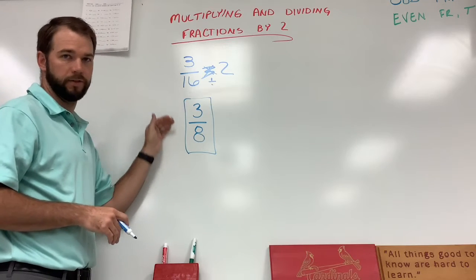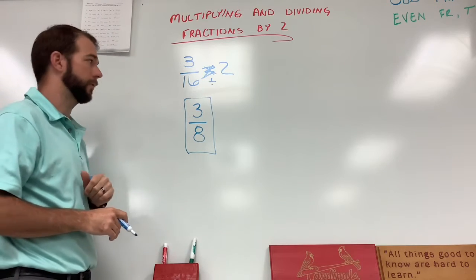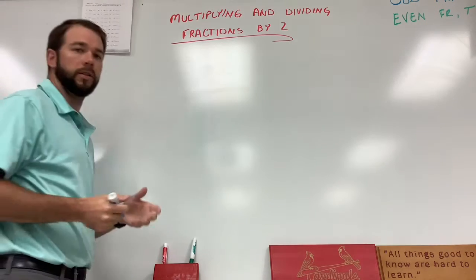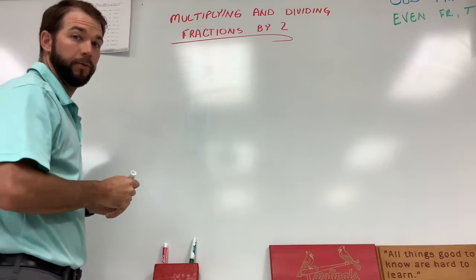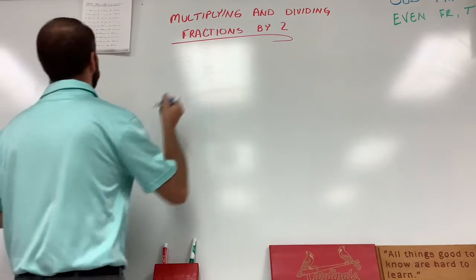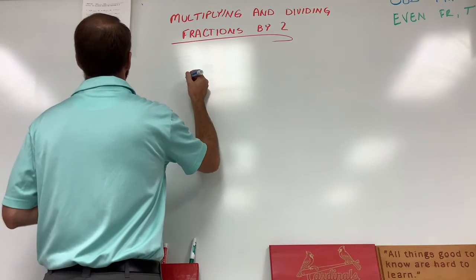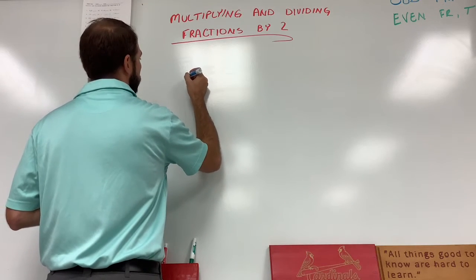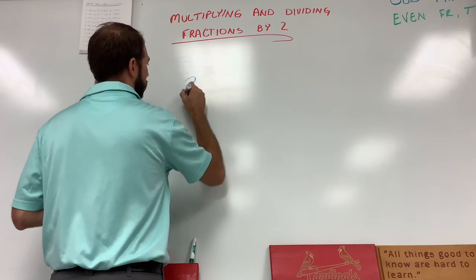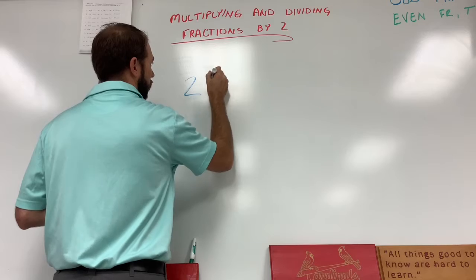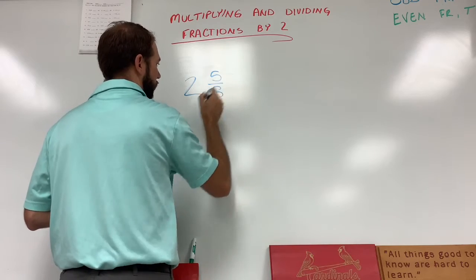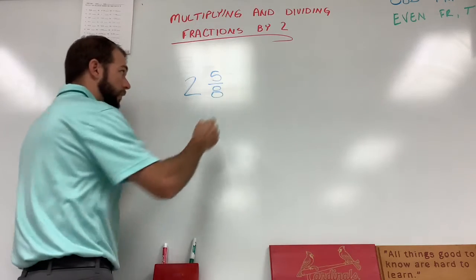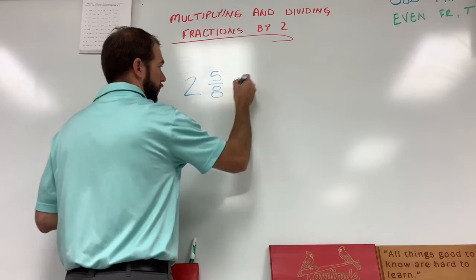That's how you know if it's reduced. Let's do another one — this time we're going to try one with a whole number. So let's do two and five eighths times two.